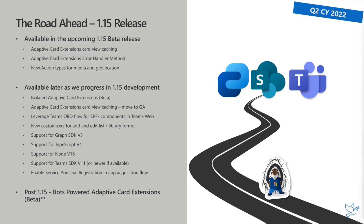In 1.15 beta you'll have CardView caching for Adaptive Card Extensions, new media and geolocation capabilities — some of which will be demoed today — and a new error handler method for better error management in cards on the Viva Connections dashboard. We're also progressing toward isolated Adaptive Card Extensions, similar to isolated web parts, giving you the ability to target specific APIs requiring elevated security access.